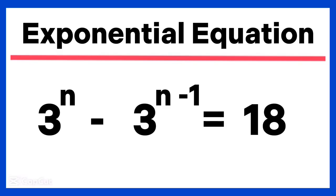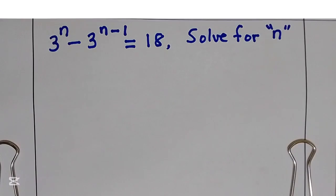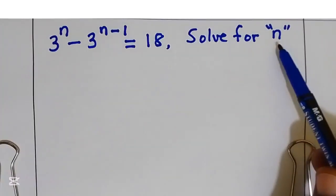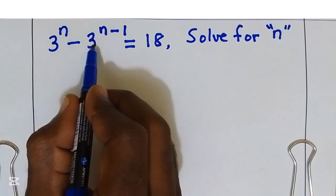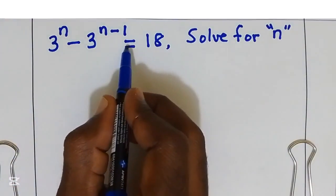Hello, welcome. My name is Walter. We have exponential equation and we are supposed to solve for n. We have 3 power n minus 3 power n minus 1 is equal to 18.